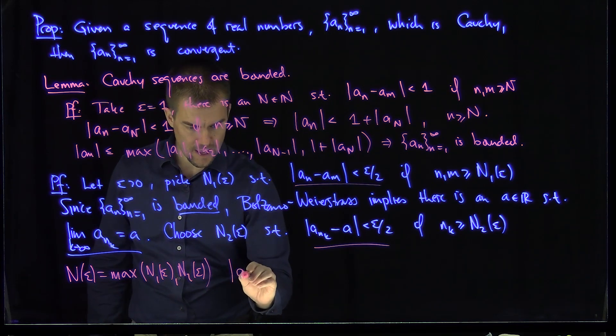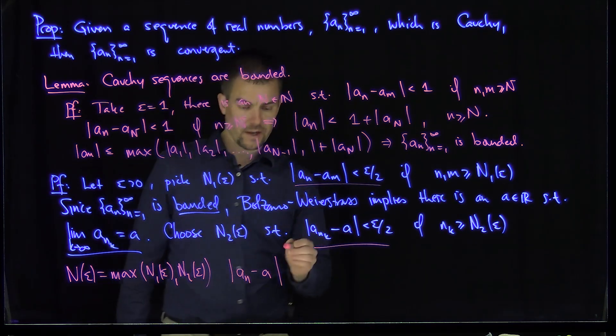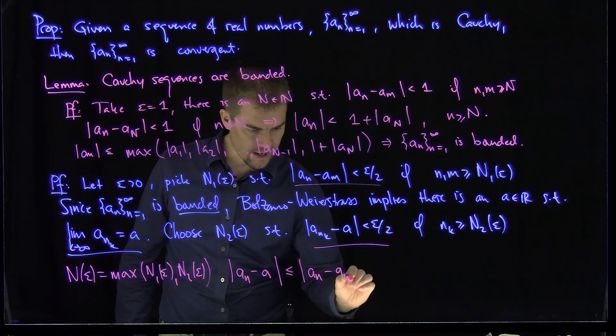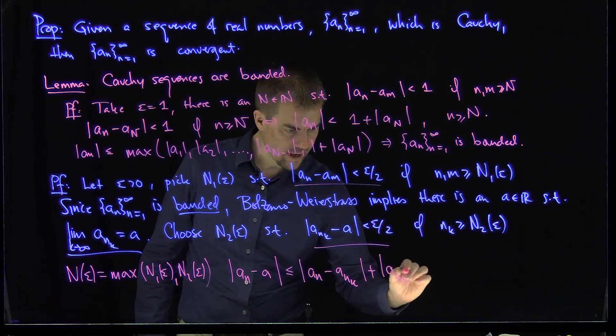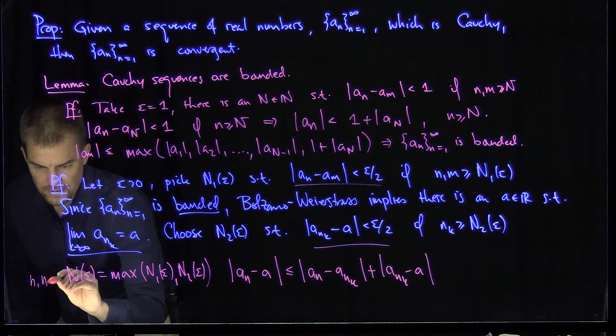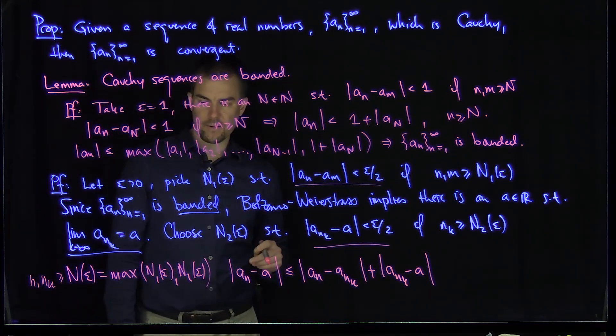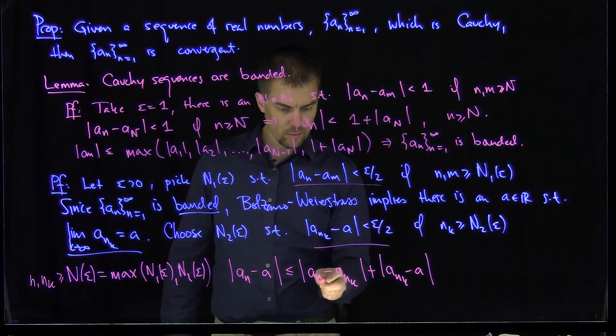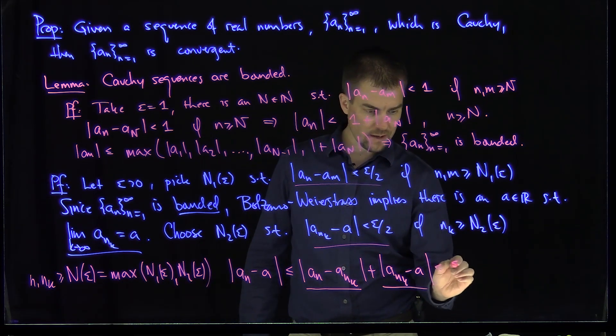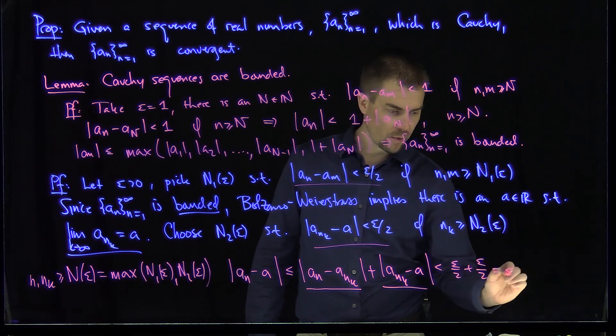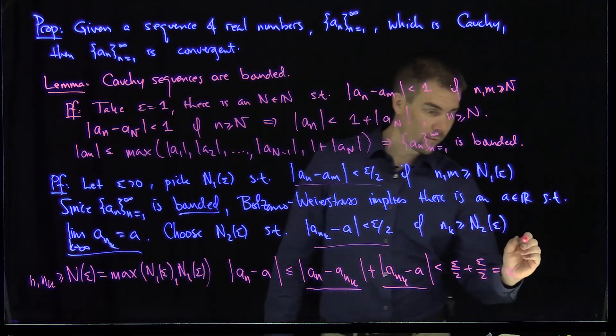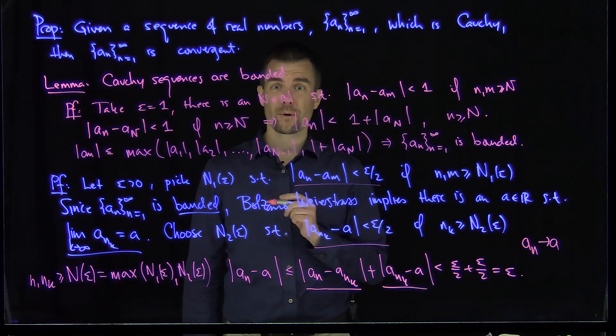And so now what I can do is this. Let's look at the difference |a_n - a|. Well what I can do is I can throw in an a_{n_k} over here. This is less than or equal to |a_n - a_{n_k}| + |a_{n_k} - a|. And now if n and n_k are both bigger than or equal to this N(epsilon), then I know that this term over here will be small by Cauchy. That will be less than epsilon over 2. And this term over here will be small by the convergence. So this will be less than epsilon over 2 plus epsilon over 2, which is epsilon. And this shows that |a_n - a| is less than epsilon if n is bigger than N(epsilon). So our conclusion, therefore, is that our sequence a_n converges to a and our Cauchy sequence is therefore convergent.